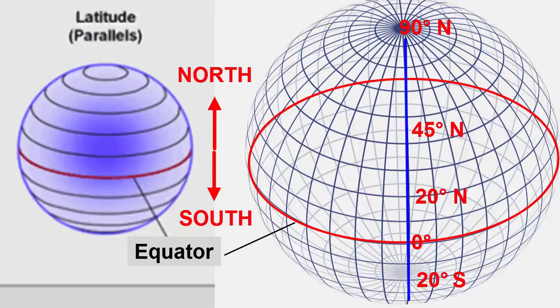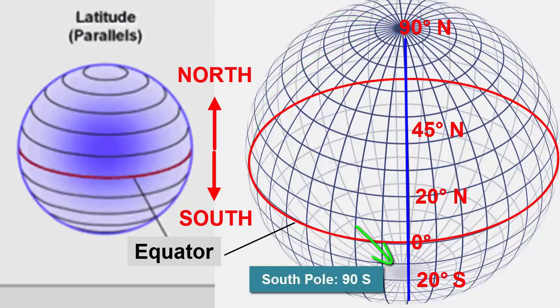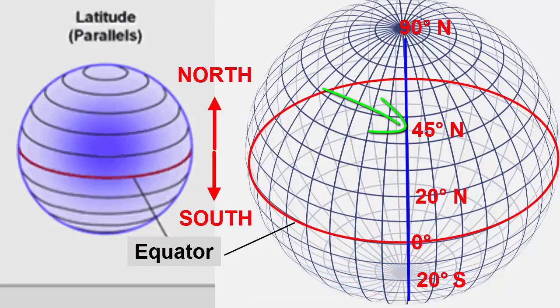For example, if we travel to the north pole, we have traveled one-quarter of a circle away from the equator, or 90 degrees north latitude. The south pole is at 90 degrees south latitude. Halfway in between the equator and the poles, we travel 45 degrees north or south.